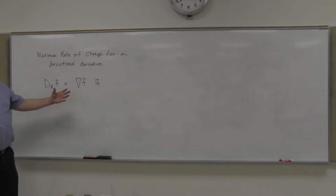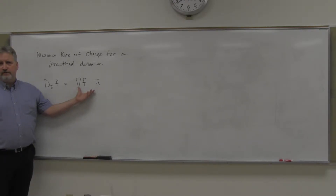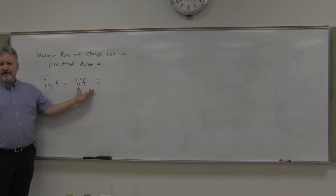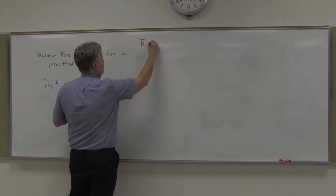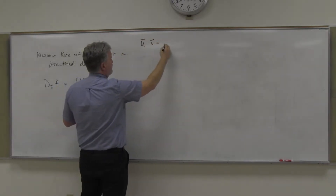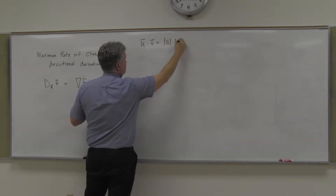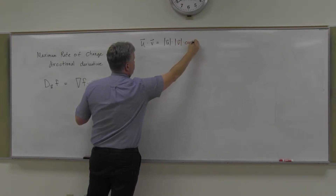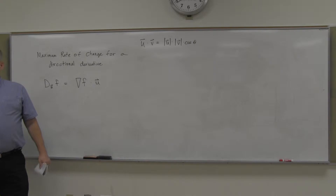From a previous discussion, we also know another equivalent expression for the dot product. If you've got u dot v, that equals the magnitude of u times the magnitude of v times the cosine of theta — those things are equivalent.